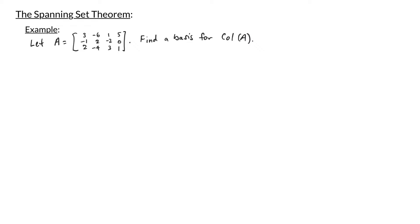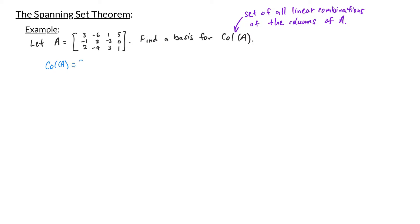Remember that the column space of A is the collection of all linear combinations of the columns of A. In other words the column space of A is the span of the columns of A. So it's the span of (3, negative 1, 2), (negative 6, 2, negative 4), (1, negative 2, 3), and (5, 0, 1).